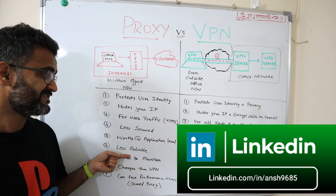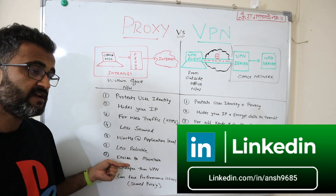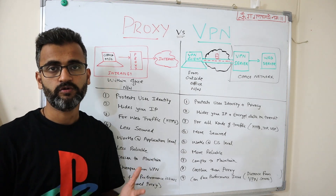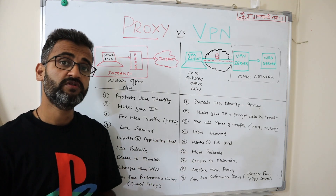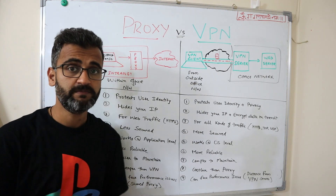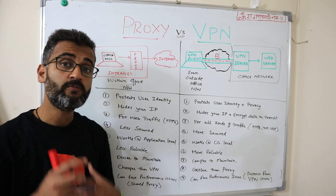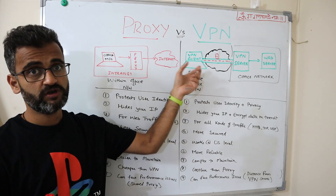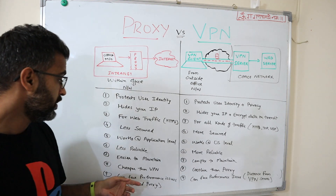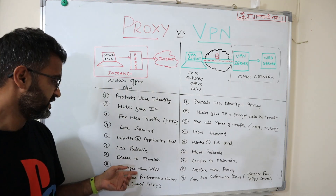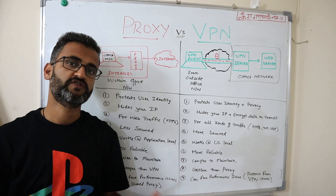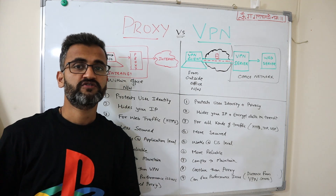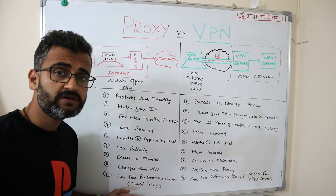To summarize further differences: proxies work at the application level, VPNs work at the OS level. Proxies are less reliable; VPNs are more reliable. Proxies are easier to set up and maintain; VPNs are more complex — you need to set up both the VPN server and a VPN client on your machine, and VPNs are memory and CPU intensive on the client side. Proxies are also cheaper, while VPNs are always costlier.